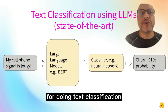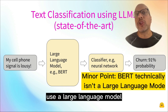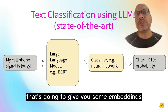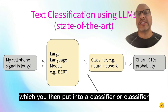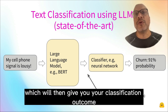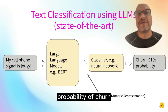The state-of-the-art way for doing text classification is to bring your text in, use a large language model — something like BERT. That's going to give you some embeddings, which you then put into a classifier or classifier head of a network, which will then give you your classification outcome. In this case, probability of churn.